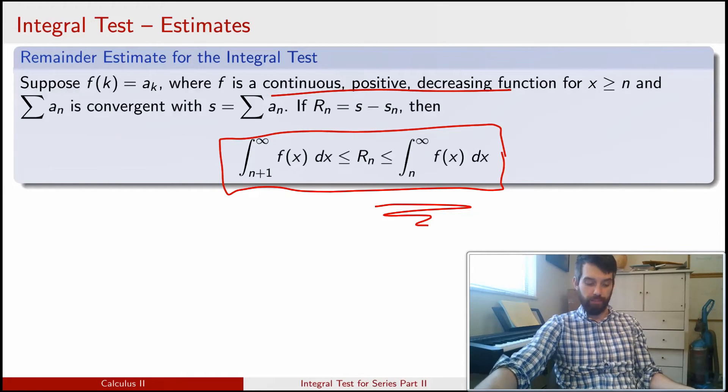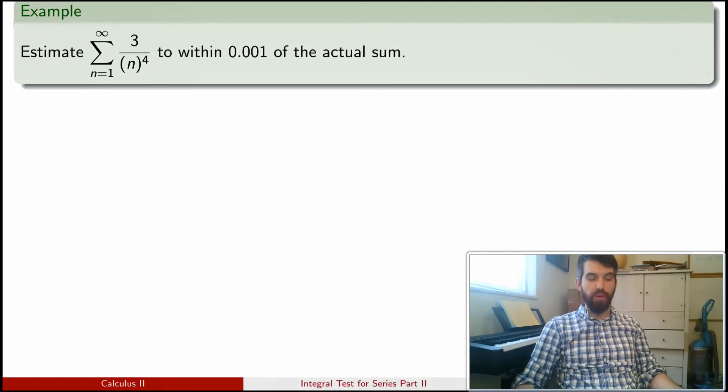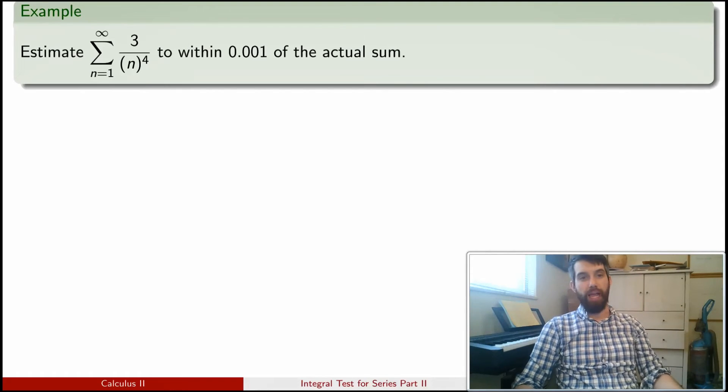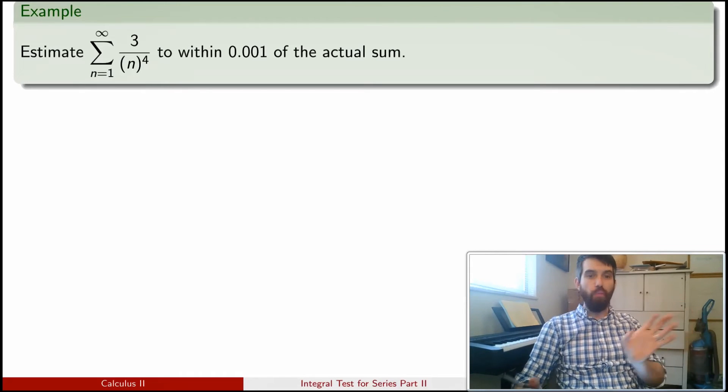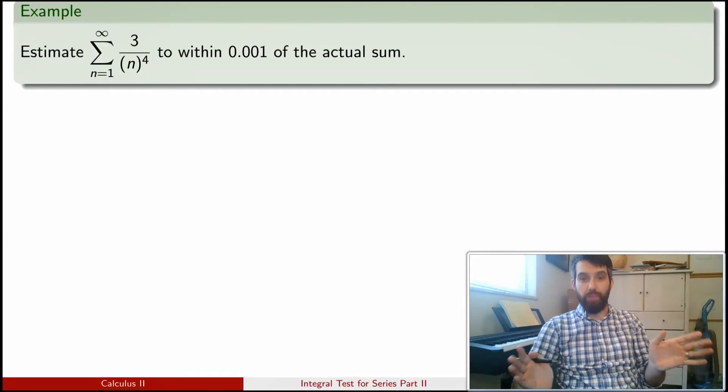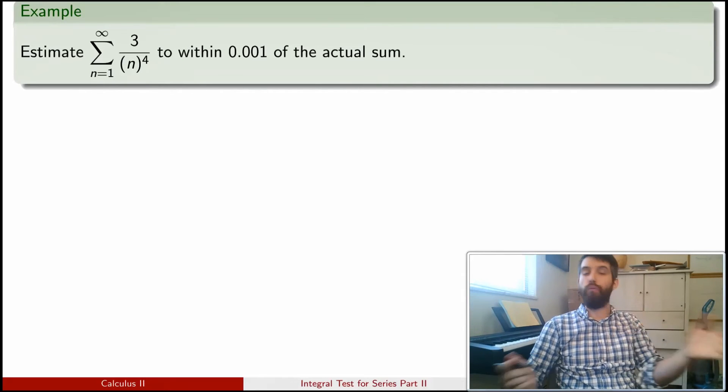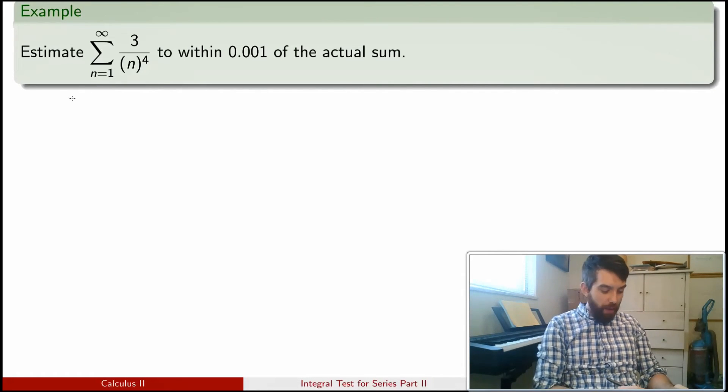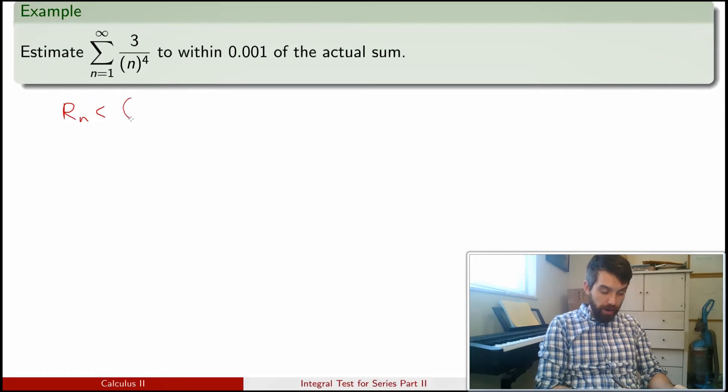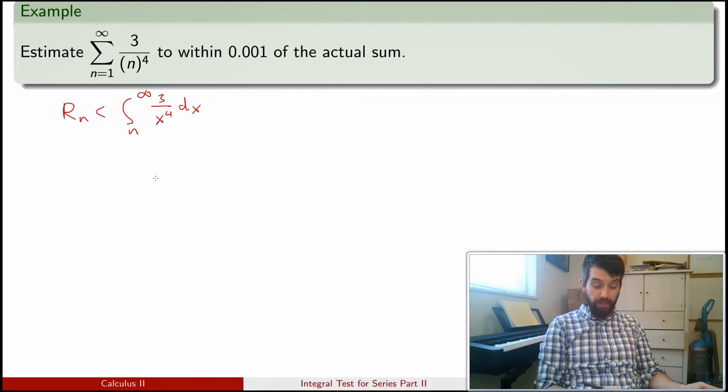Let's see an example of how this actually applies. Here I have a specific example. I've got the sum of 3 divided by n to the power of 4. I want to be able to estimate what that sum is. I don't know what it is exactly, but I want to estimate it to within 0.001 of whatever its true value is. That is to say, I want the remainder term Rn here to be less than or equal to 0.001. I don't even know what n is yet. But what I do know is that I can compare the Rn to the integral from n up to infinity of 3 divided by x to the power of 4 dx. I know how to evaluate improper integrals, so I can just do that.